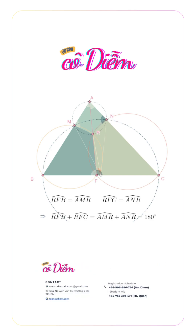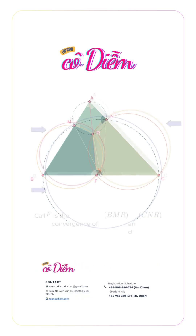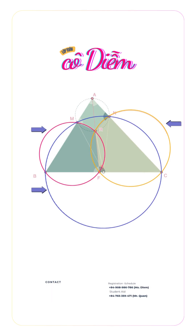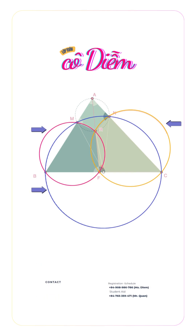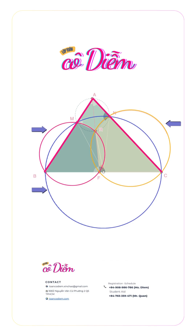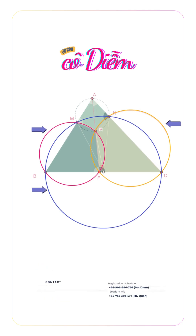Therefore F lies on side BC, which was to be proved. Remark: Let O1 and O2 be the circumcircles of triangles BMR and CNR. Then BM is the radical axis of O1 and Ω, CN is the radical axis of O2 and Ω, and FR is the radical axis of O1 and O2. The three radical axes BM, CN, and FR concur at point A, the radical center of the three circles. Hence points A, R, and F are collinear, meaning F is the foot of the angle bisector from A in triangle ABC.